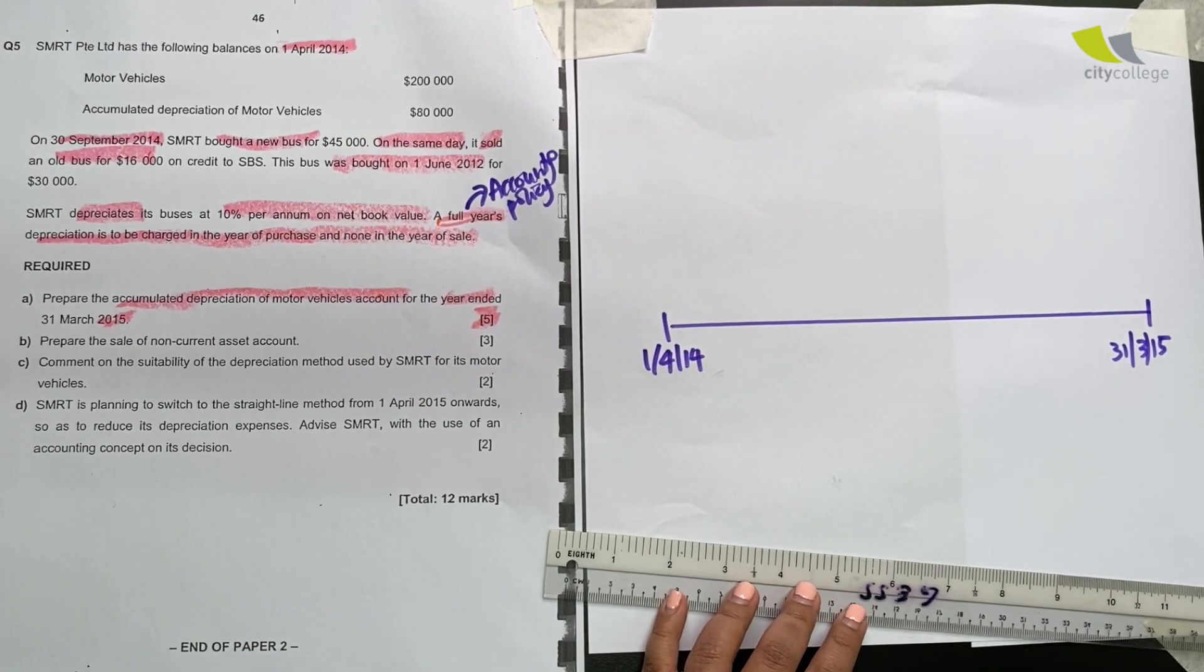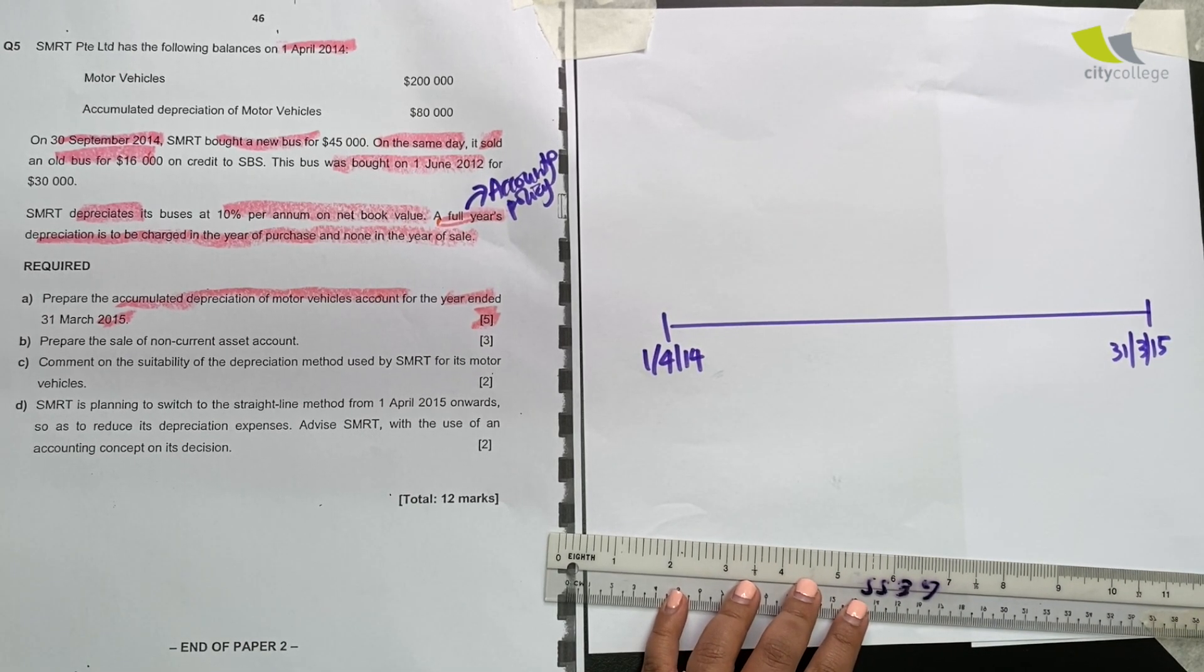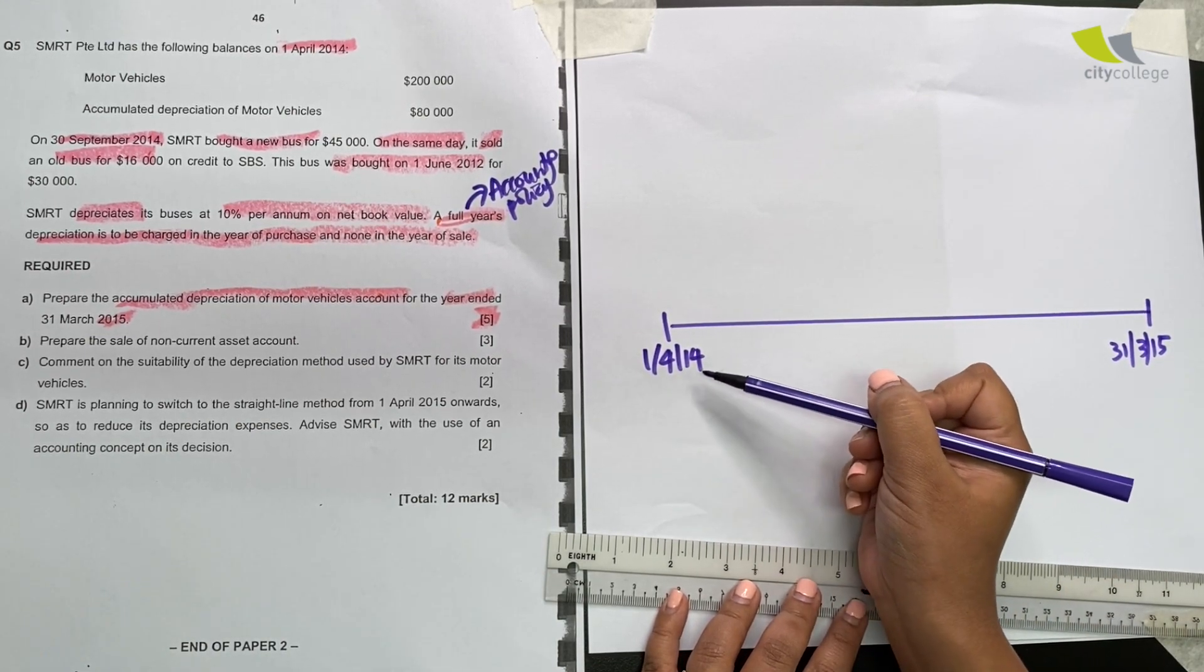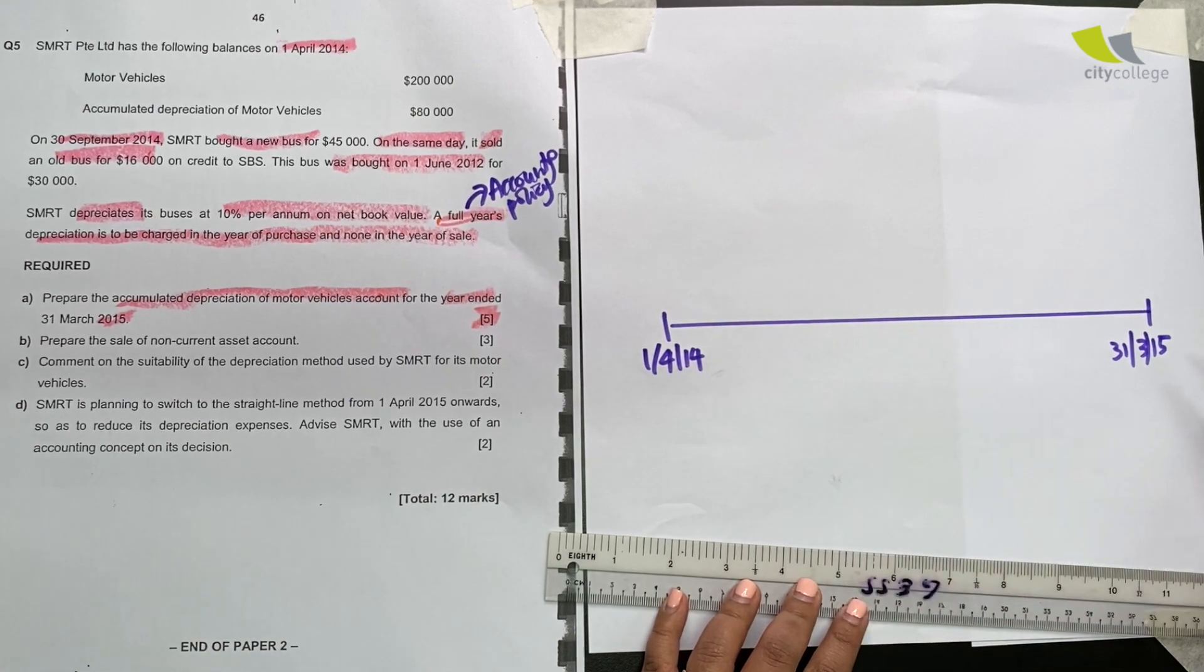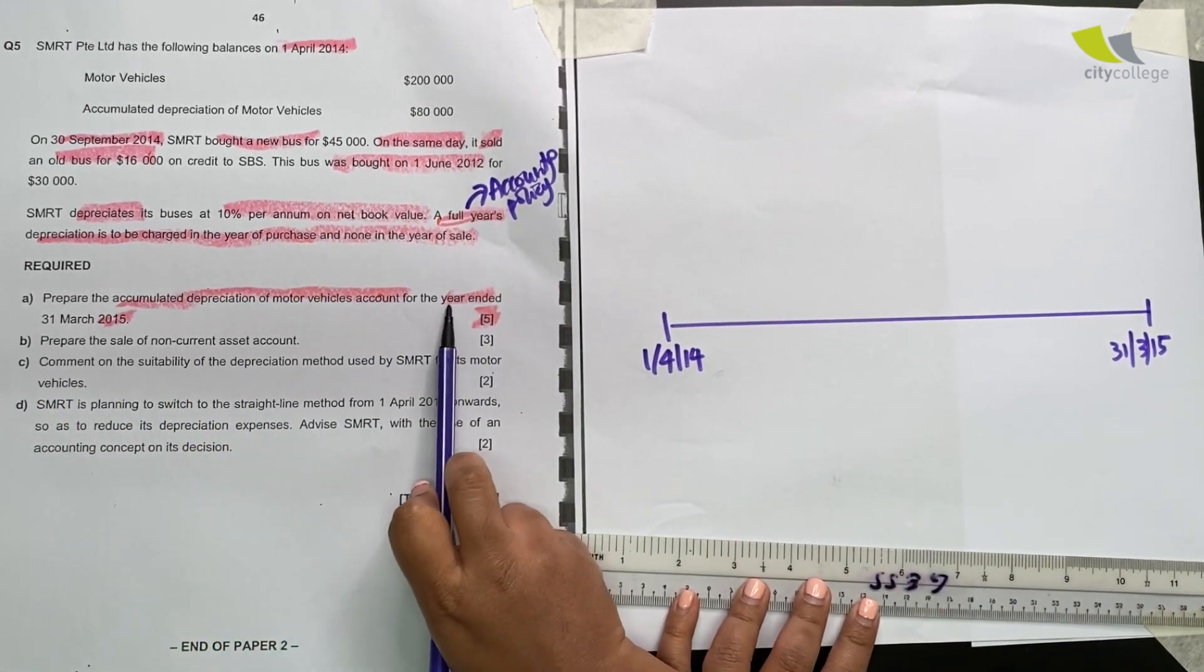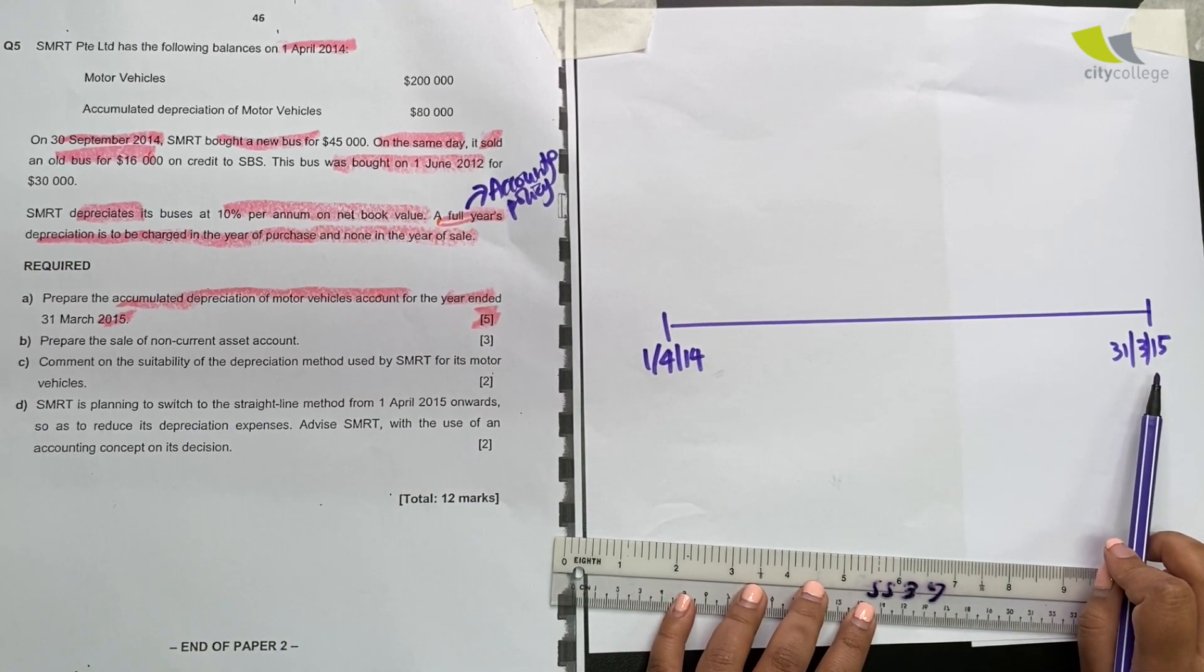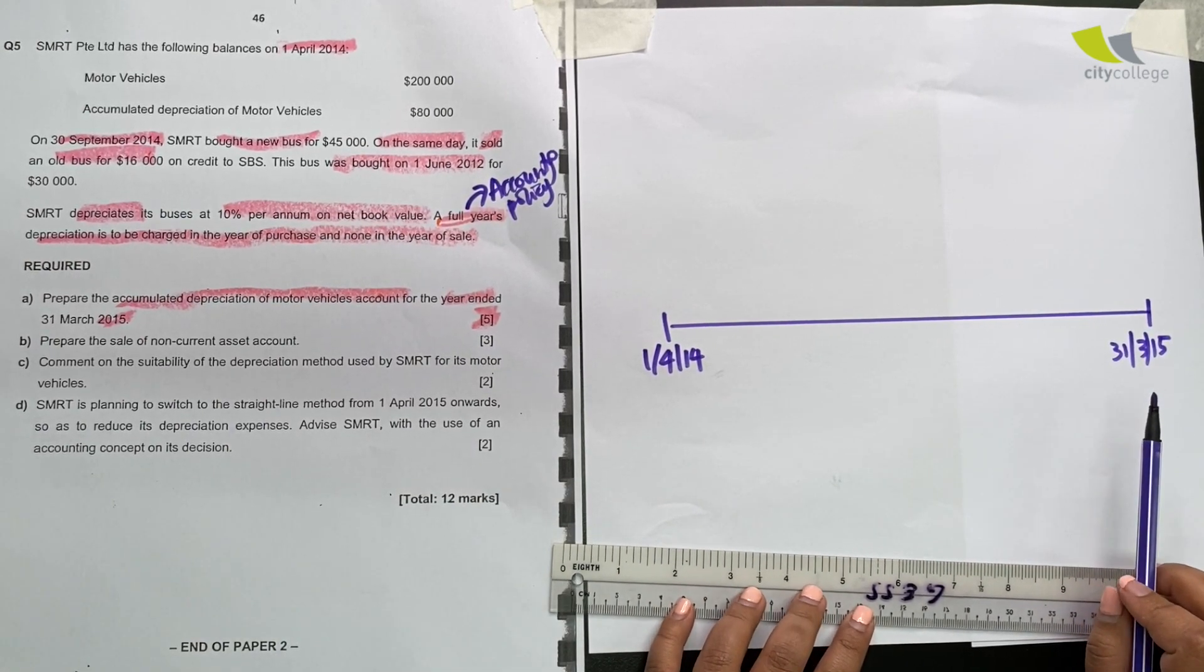So the first thing you need to do is to make sure you know the months in the year. And if I end on 31st March, I would actually start 1st April the year before. So this is the year end that the question is actually asking us about. Year ended 31st March 2015. Let's put the information in here.